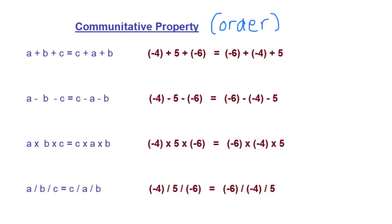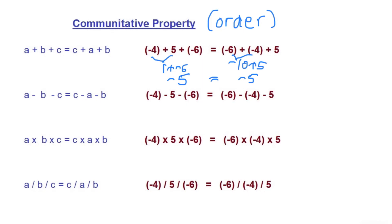The commutative property deals with order. On one side I have one order, and on the other side of the equal sign, I can change up the order of the terms. For addition, a plus b plus c equals c plus a plus b — the order is mixed up. Substituting values: 1 plus negative 6 equals negative 5 on one side, and negative 10 plus 5 equals negative 5 on the other. Both sides are equivalent.